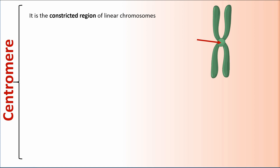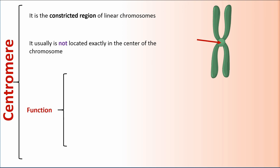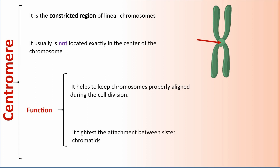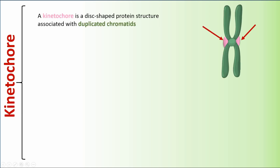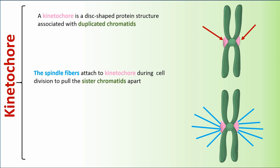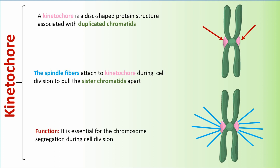The centromere is the constricted region of linear chromosomes. It is usually not located exactly at the center of the chromosome. Its function is to help keep chromosomes properly aligned during cell division, and to tighten the attachment between sister chromatids. The kinetochore is a disc-shaped protein structure associated with duplicated chromatids. The spindle fibers attach to the kinetochore during cell division to pull sister chromatids apart. It is essential for chromosome segregation during cell division.